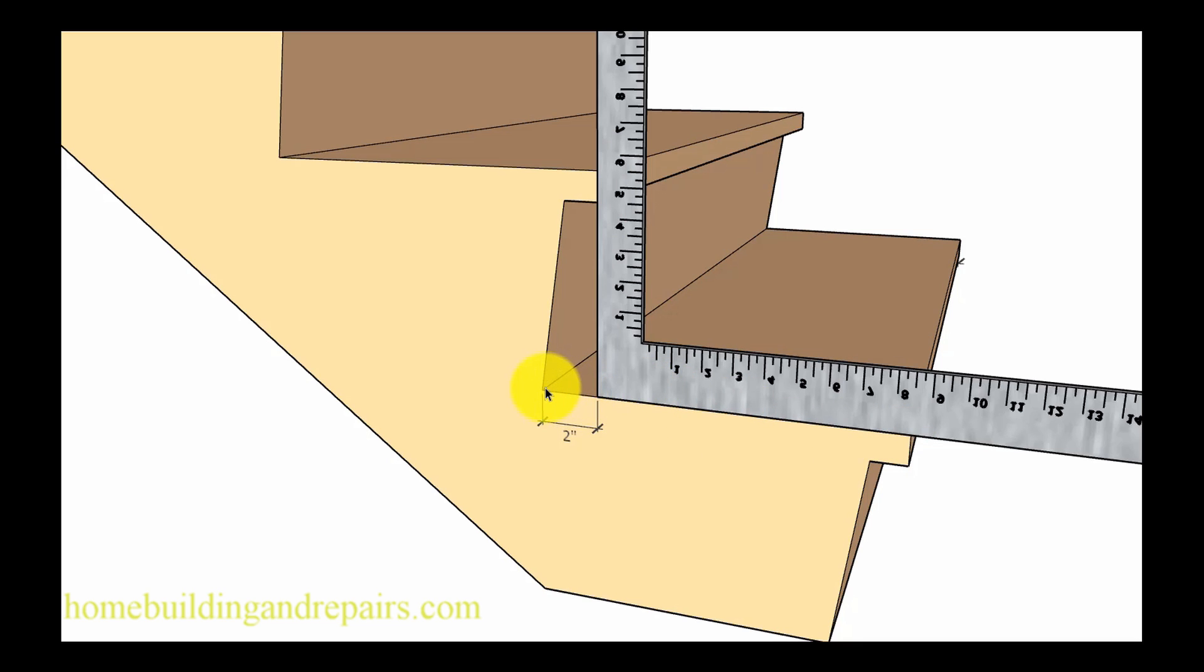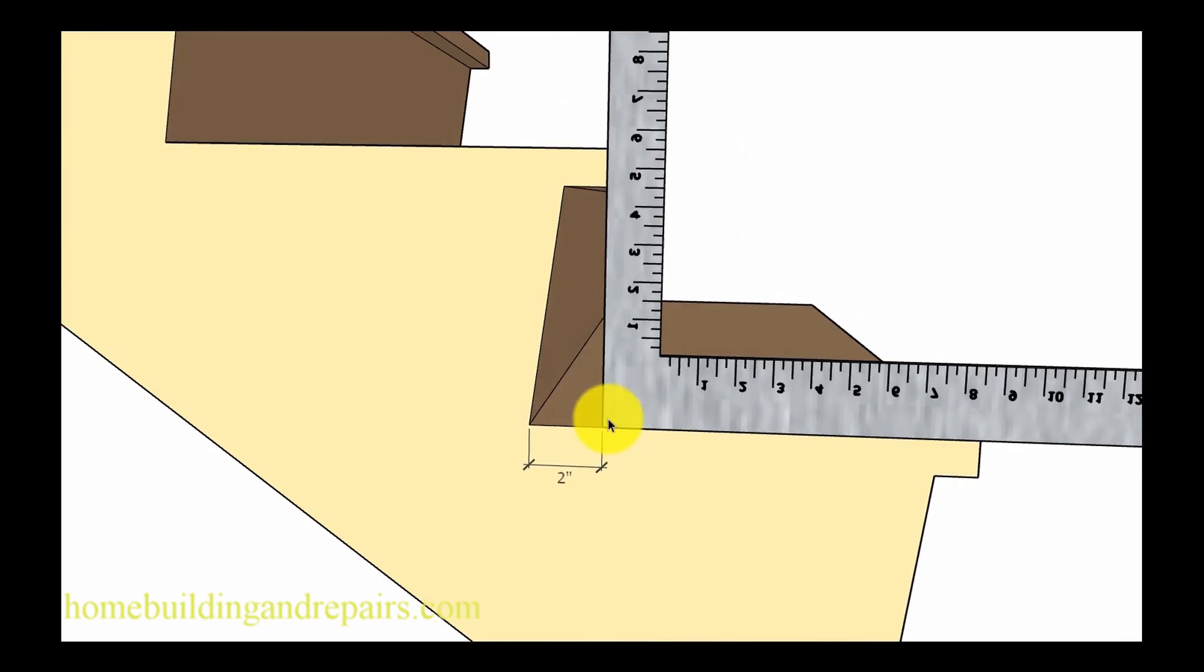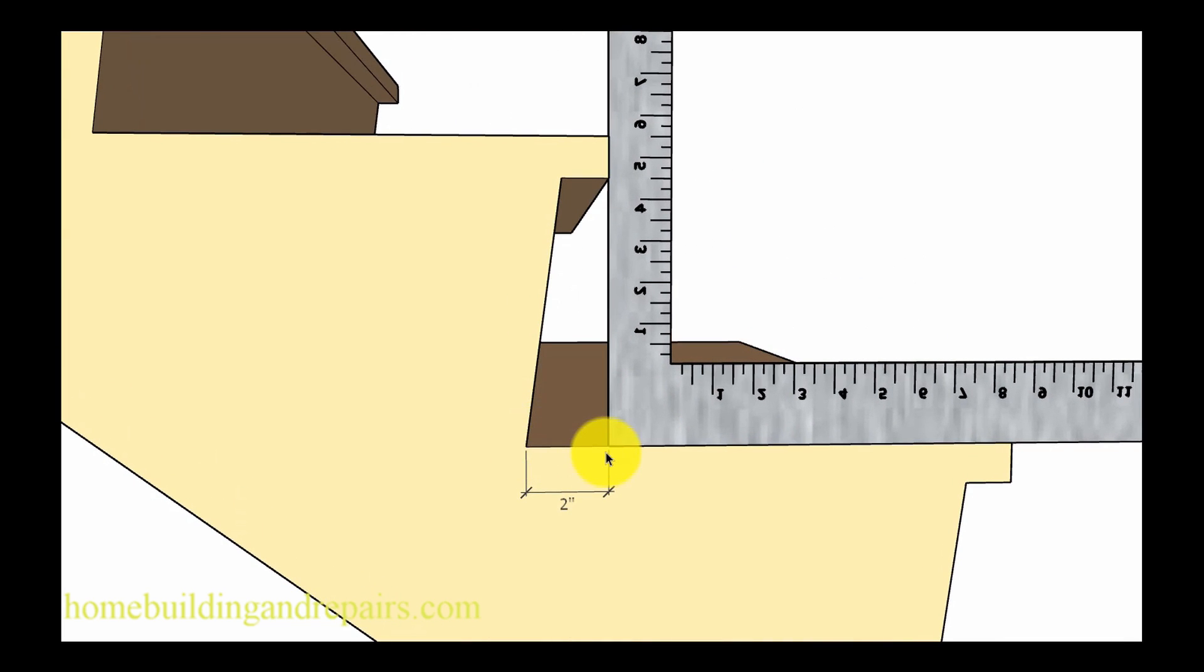So the measurement is going to be from the nosing to the face of the tread at a 90 degree angle. You're simply going to come back here and this distance here is what will need to be less than the inch and a quarter or whatever is recommended by your local building department.